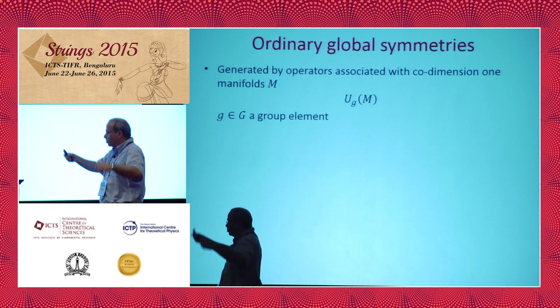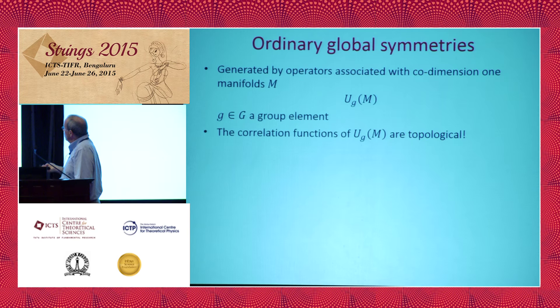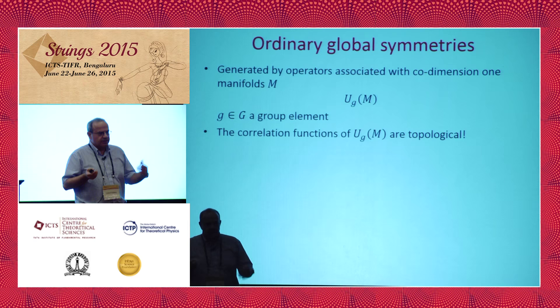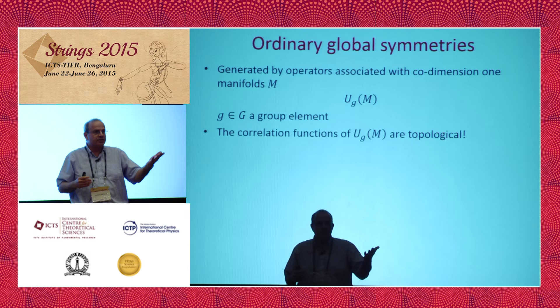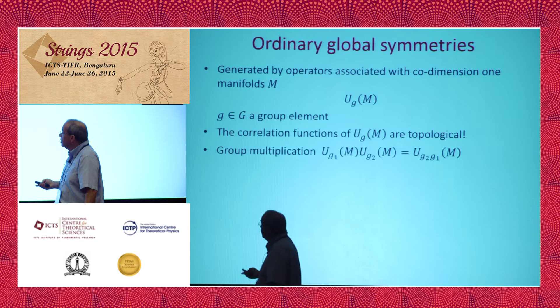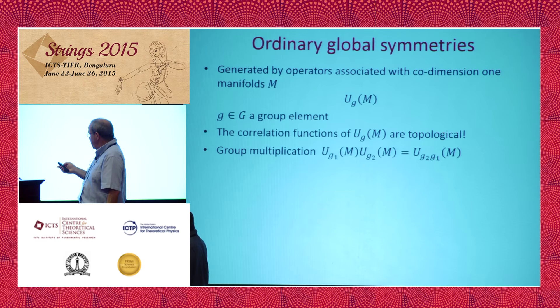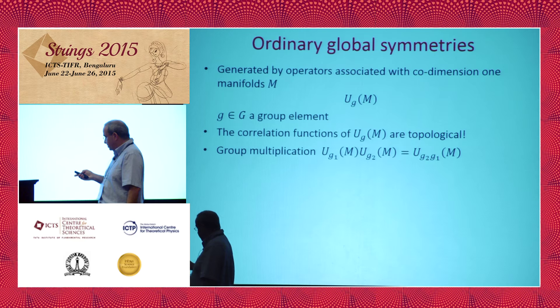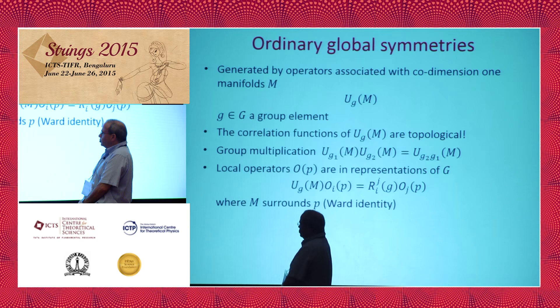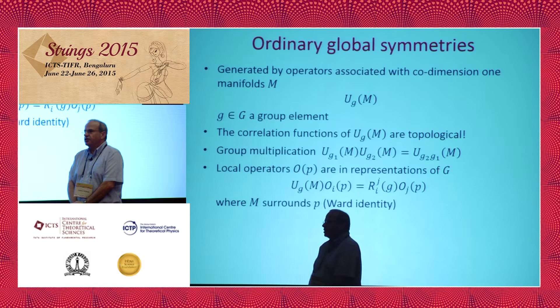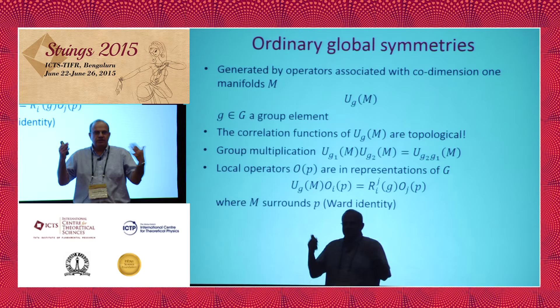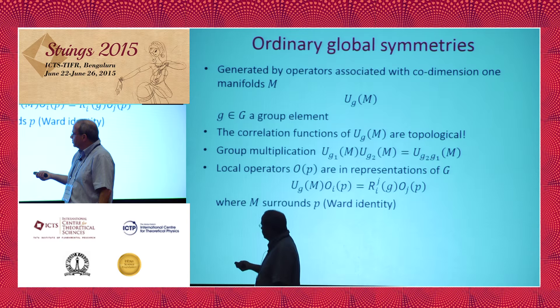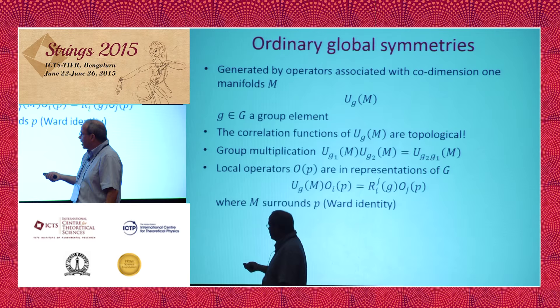We can also let M be, in Euclidean space, some closed co-dimension-one manifold, so that as we cross it we undergo the global symmetry transformation. This definition is good whether the symmetry is continuous or discrete, and also valid whether the symmetry is spontaneously broken or not. Once we have such an object U, we can study its correlation functions, which are topological — this is the statement that this is a symmetry, so we can deform the manifold M and get exactly the same answer. We can multiply such operators and get the operator U associated with the product of the group elements.